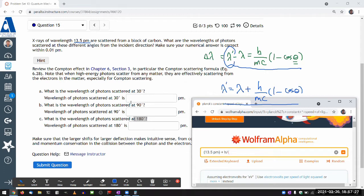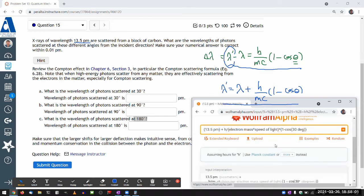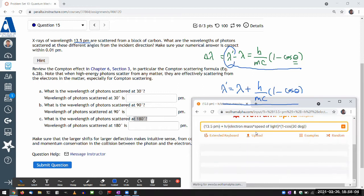And the question tells you that when high energy photons scatter from matter, they are effectively scattering from the electrons in the matter. So even though it's talking about block of carbon, I'm not going to use mass of the carbon atom. I'm going to use mass of the electron. That's electron mass is the one that matters for this scattering, times speed of light times 1 minus cosine of 30 degrees. Okay, and I need to check input interpretation as I scroll through. And yeah, it's not hours, it's Planck's constant.